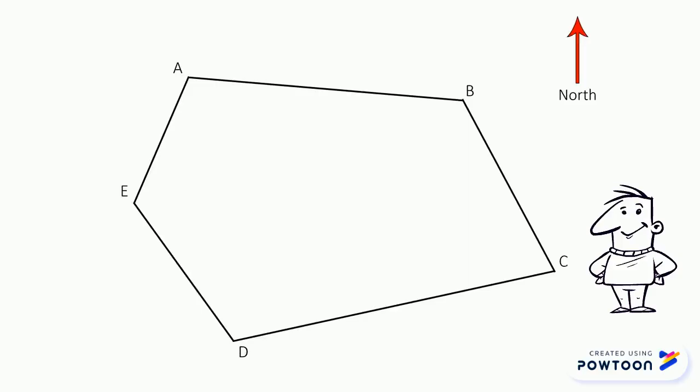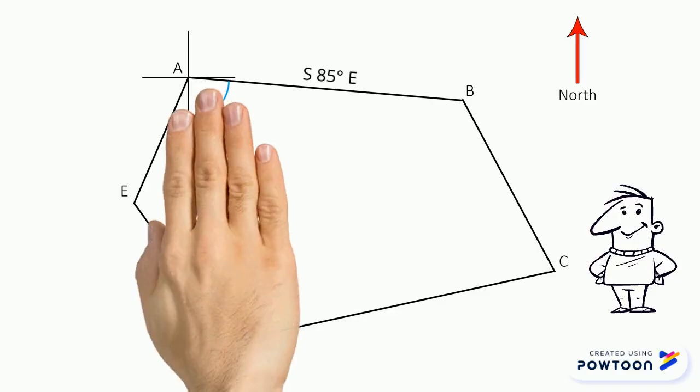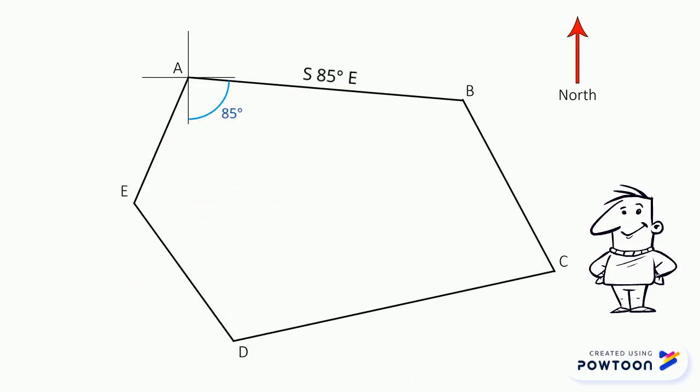The given bearing of point A towards point B is south 85 degrees east. Since 85 degrees is already given, therefore this part is 85 degrees. And in point E, it has the given bearing of north 20 degrees east towards point A.